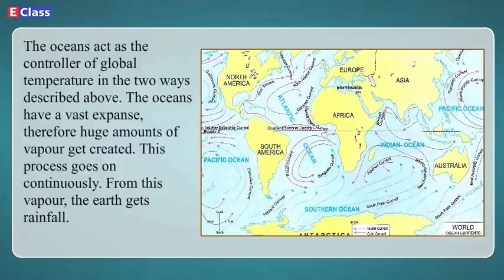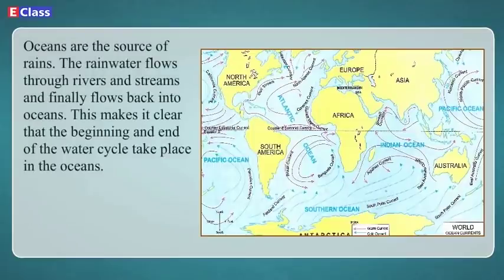The oceans have a vast expanse; therefore, huge amounts of vapour get created continuously. From this vapour, the earth gets rainfall. Oceans are the source of rains. The rainwater flows through rivers and streams and finally flows back into oceans. This makes it clear that the beginning and end of the water cycle takes place in the oceans.